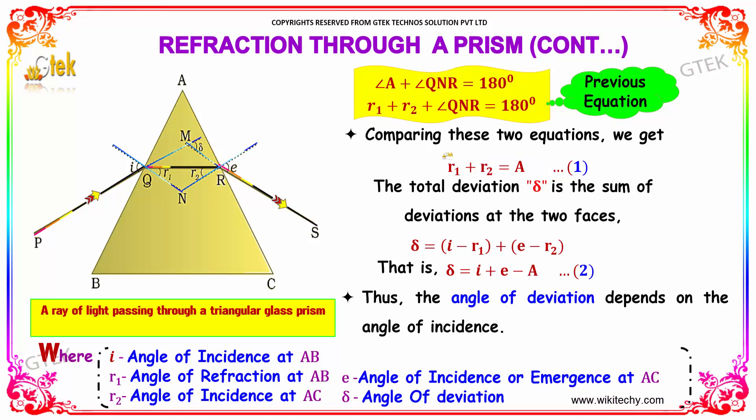The total deviation delta is the sum of deviation at the two faces. We got delta equals i minus r1 plus e minus r2. This is the equation. From this, delta equals i plus e minus A, replacing r1 plus r2.